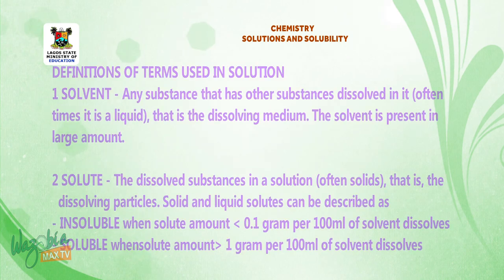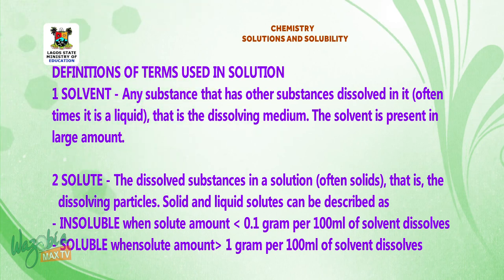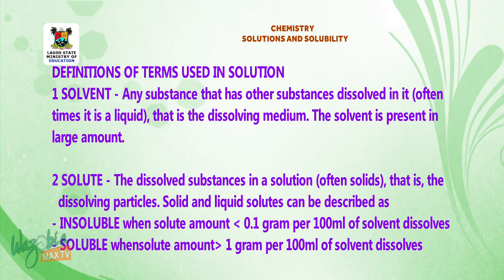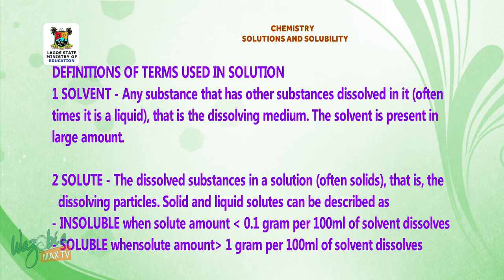Definition of terms used in solution. Number 1: Solvent — any substance that has other substances dissolved in it; often it is a liquid, that is, the dissolving medium. The solvent is present in large amount. Number 2: Solute — the dissolved substance in a solution, often solid, that is, the dissolving particles.